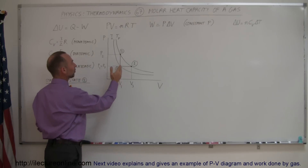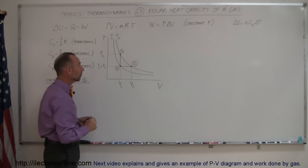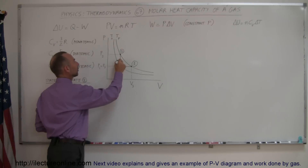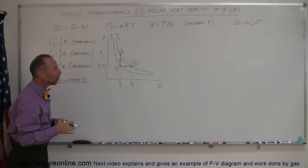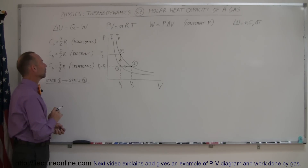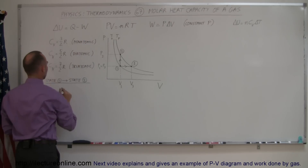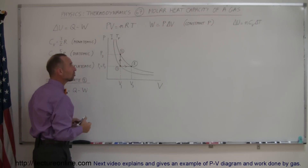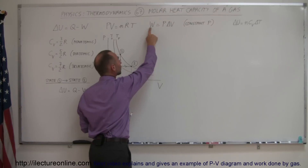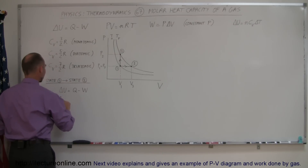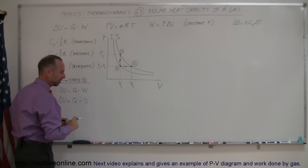Notice that when the gas changes from state one to state two, the volume does not change — it remains constant. And when the gas changes from state one to state three, the pressure doesn't change. These arrows indicate the direction the gas changes its state. Now, going from state one to state two, we start with the first law of thermodynamics: delta U equals Q minus W. Since the volume doesn't change, no work is done by the gas, so delta U equals Q.